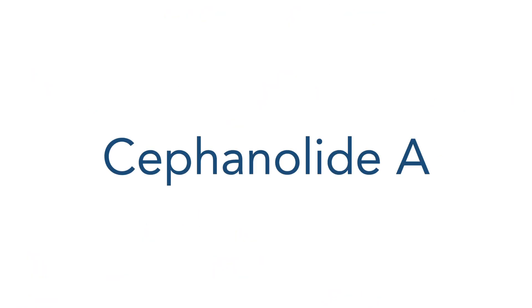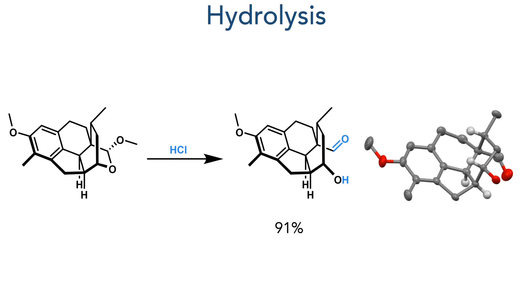From this one intermediate they could synthesize several cephanolide compounds. To access cephanolide A, they first hydrolyzed the acetal using hydrochloric acid, forming the ring-opened structure in a 91% yield and unambiguously confirming its structure using X-ray crystallography.